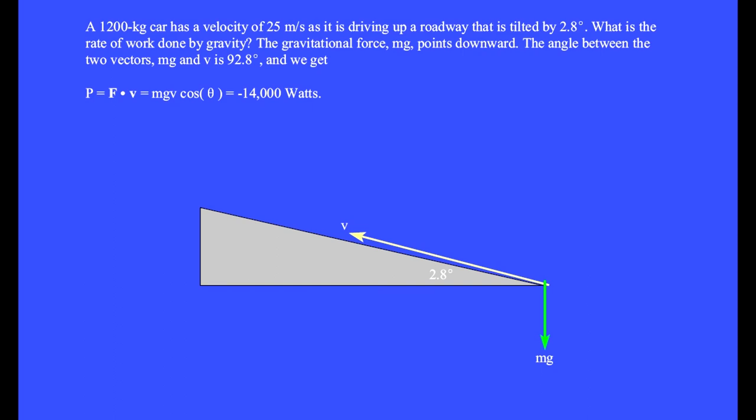A 1200 kilogram car has a velocity of 25 meters per second as it is driving up a roadway that is tilted by 2.8 degrees. What is the rate of work done by gravity?